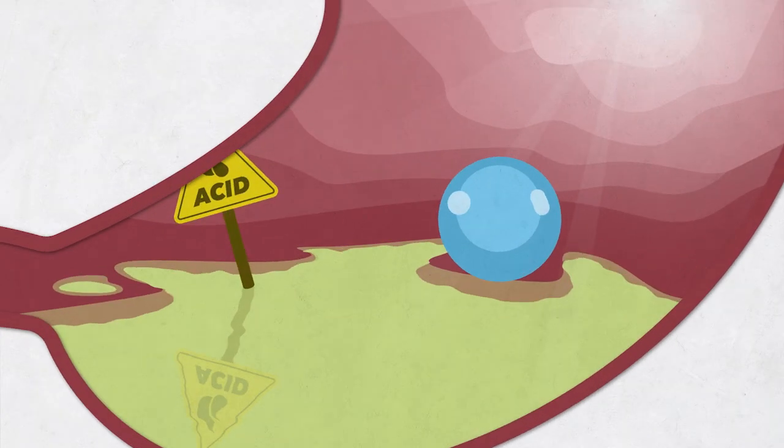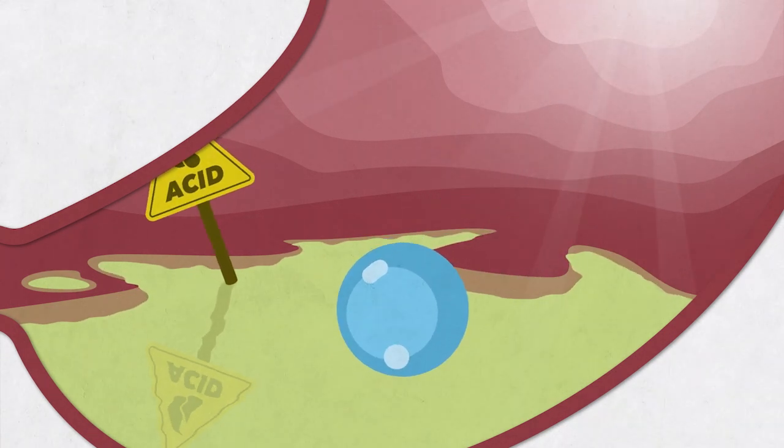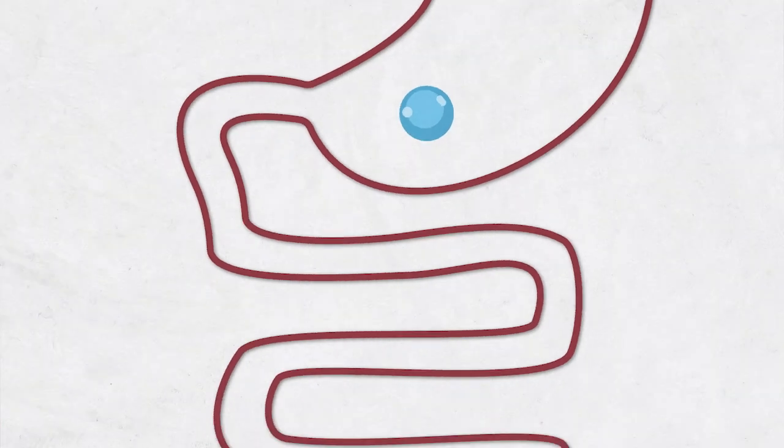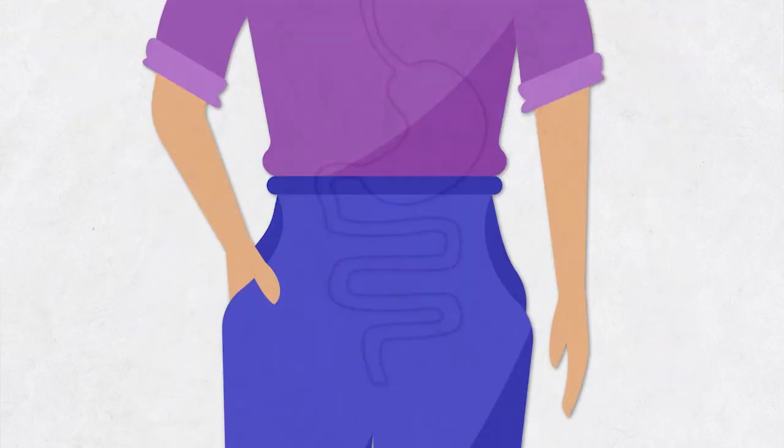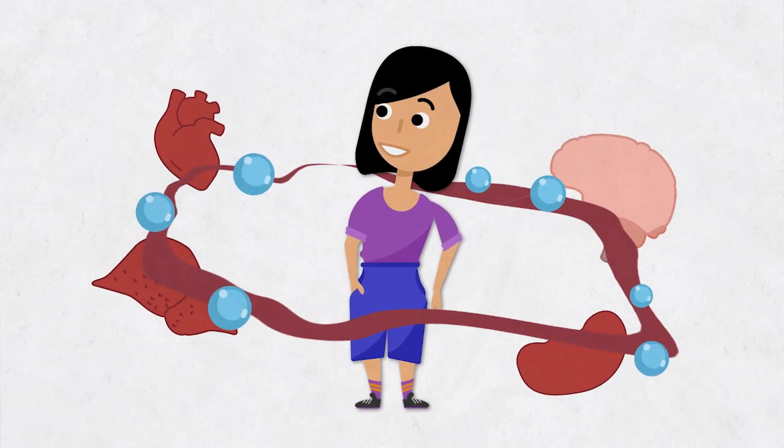As our bubble enters the acidic stomach, it protects its precious nutrients and remains intact as it is absorbed through the intestinal wall into the bloodstream and delivered to our target tissues and cells where the nutrients can be optimally utilized.